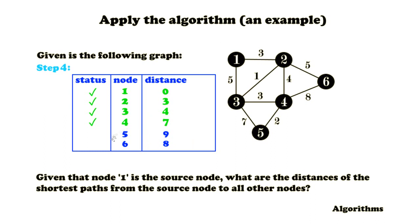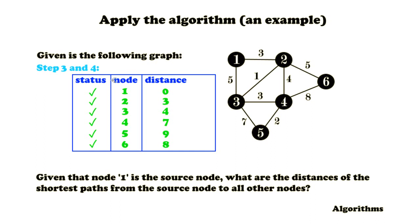We mark the unvisited node with the smallest distance, which is now node 6. Node 6 doesn't have any outgoing edges to nodes we haven't visited yet, so we can just mark it as visited — steps 3 and 4 require nothing. For the last unvisited node, node 5, it is automatically the one with the smallest distance. We mark it as in progress, but since all other nodes have already been visited, there are no more outgoing edges to check. We mark it as done and we're finished. These distances are the shortest paths from the source node to all other nodes — that's the final answer.